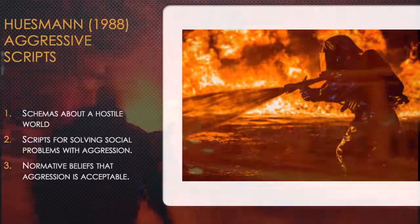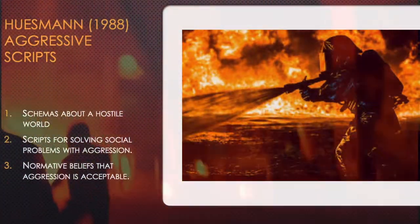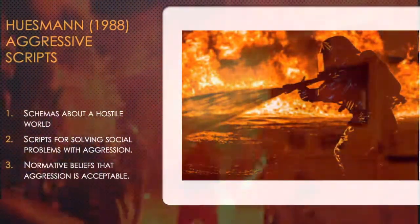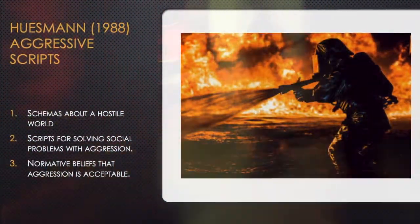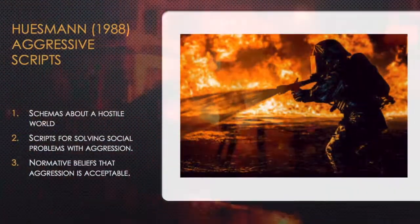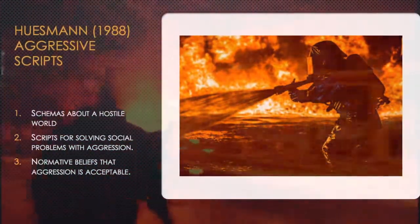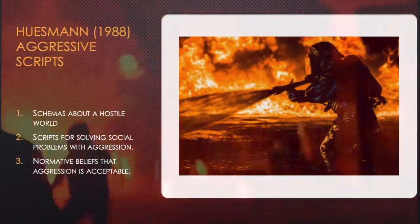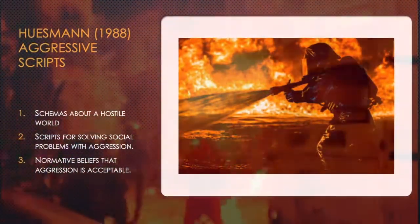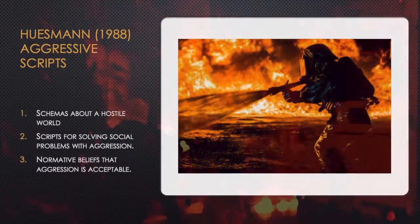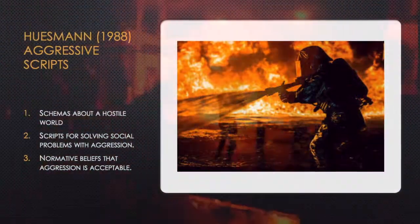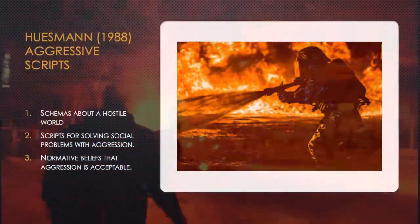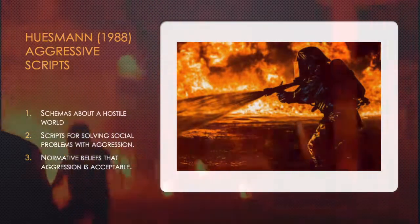This was found by Bandura 1977. Huseman 1988 found that aggression in social learning arose from schemas about a hostile world, scripts for solving social problems that focus on aggression, and normative beliefs that aggression is acceptable. As you can see, these three elements come together to perpetuate the idea of aggression being normal, acceptable, and used to solve social problems.